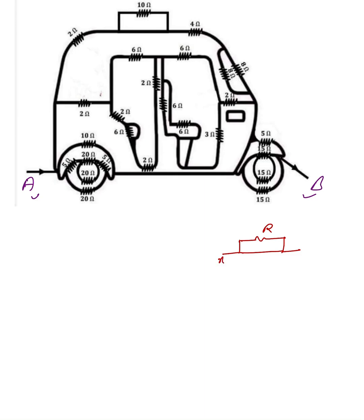Suppose that here is terminal X and here is terminal Y. What about R of XY? If in doubt, suppose that this point is at potential 1 and that point is also at potential 1, because there is no resistance between these two. The voltage drop between X and this point — you can say both are at the same potential X.